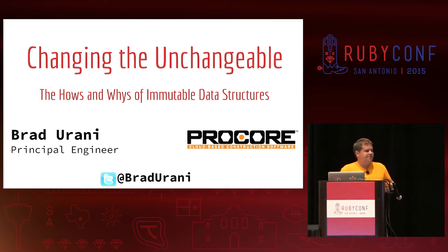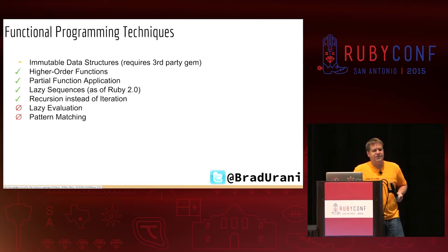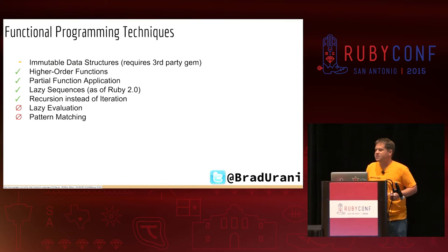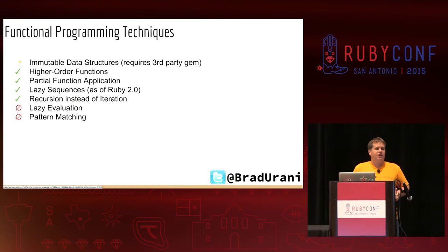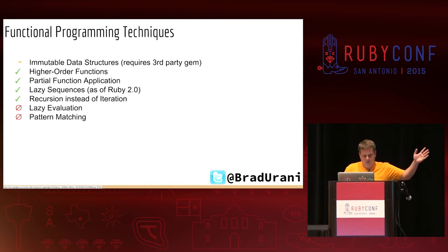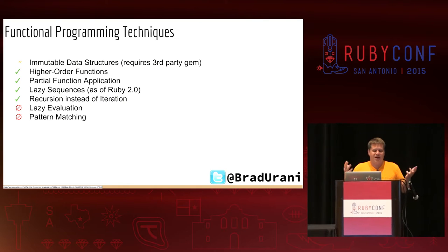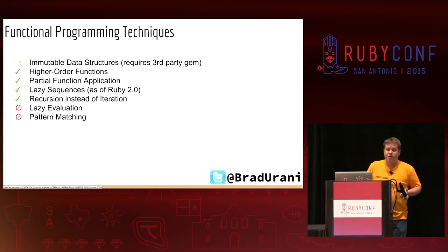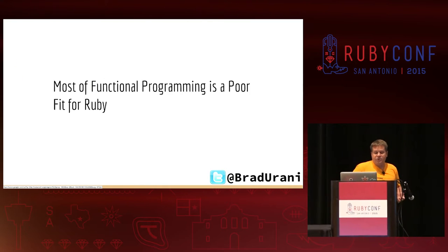It got me thinking about how we can do some types of functional programming in Ruby. What do I mean by functional programming? Functional programming is techniques used to isolate state change — it's what you get when you combine a number of techniques and also use some discipline. It's what you do and also what you don't do. Ruby has a lot of the stuff you need for functional programming built in. Immutable data structures require a third-party gem. Higher-order functions would be like passing lambdas around. Partial functional application is like currying — we don't do that a lot in Ruby. We do have lazy sequences as of Ruby 2, and you can always recurse in Ruby. We don't have lazy evaluation and pattern matching.